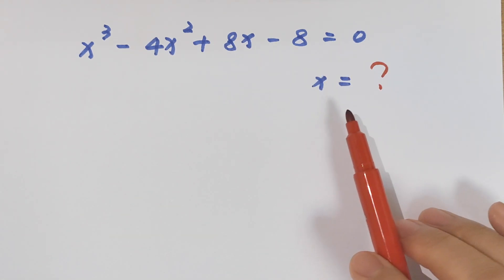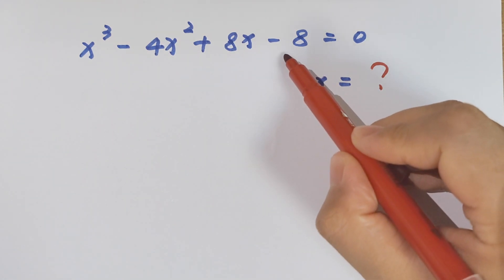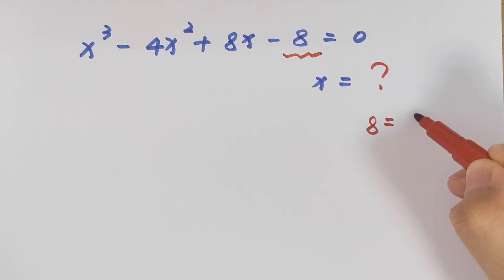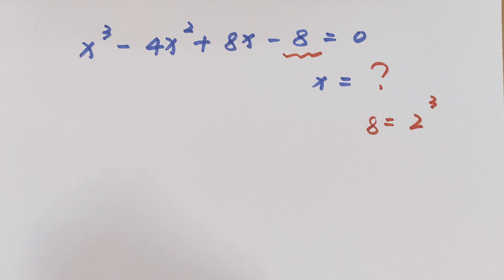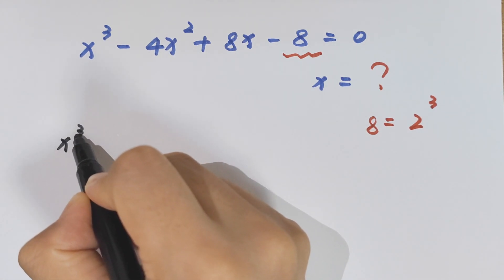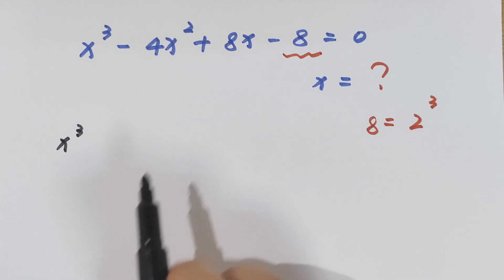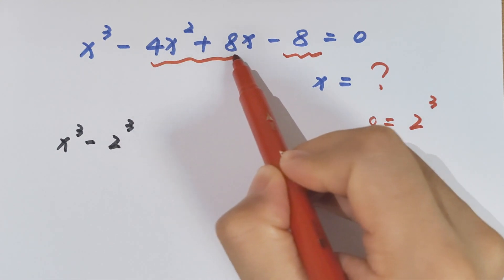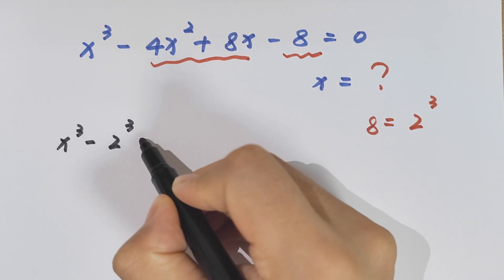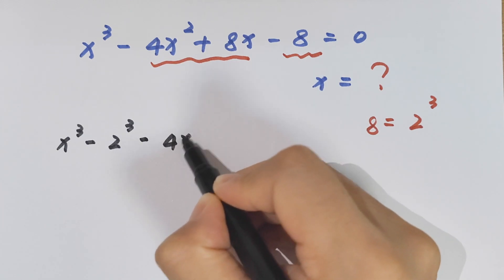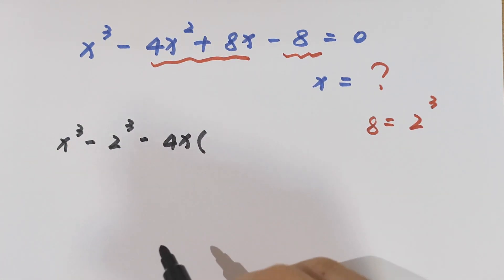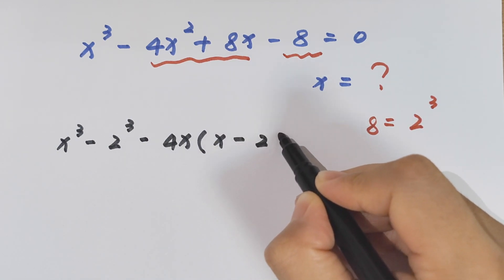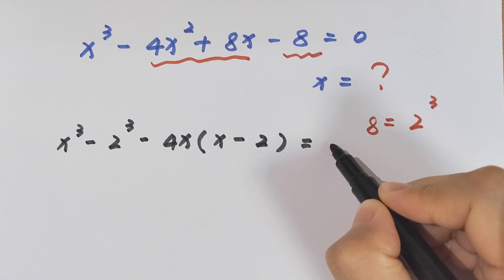To find the value of x, first note that 8 is equal to 2 cubed. So x cubed minus 8 is the same as x cubed minus 2 cubed. And in this part we can take 4x out of the bracket, so to be x minus 2 bracket equals 0.